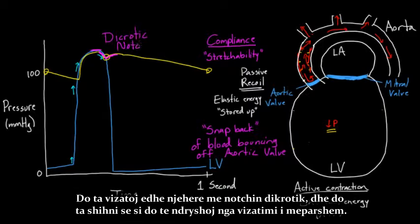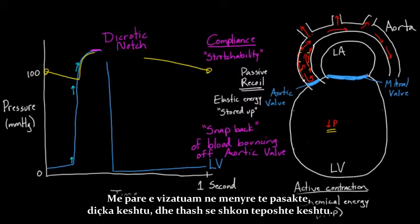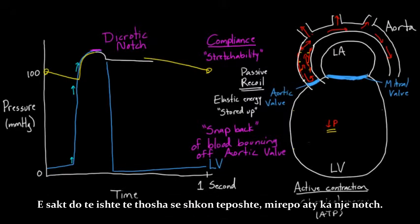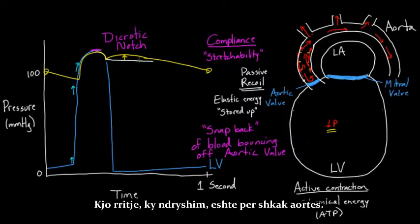I'm going to draw this again with the dicrotic notch so you can see how it differs from before. The inaccurate way is to draw the aortic pressure simply going straight down. The more accurate way is that it goes down, but then there is a notch that comes in — this small increase is because of the compliance of the aorta.